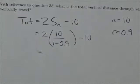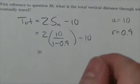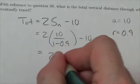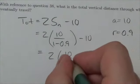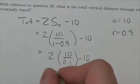And now we just have to evaluate this. And it's really not all that difficult to go through and do this. This is going to be 2 times 10 over, well, 1 minus 0.9 is 0.1 minus 10.